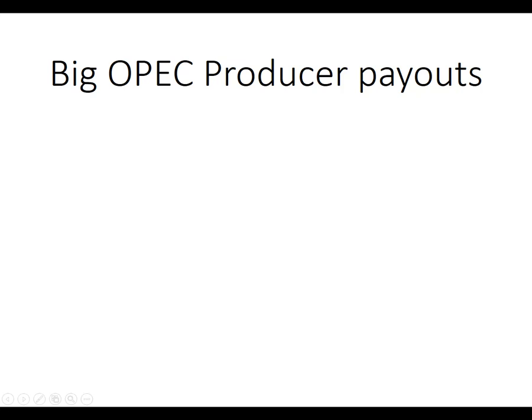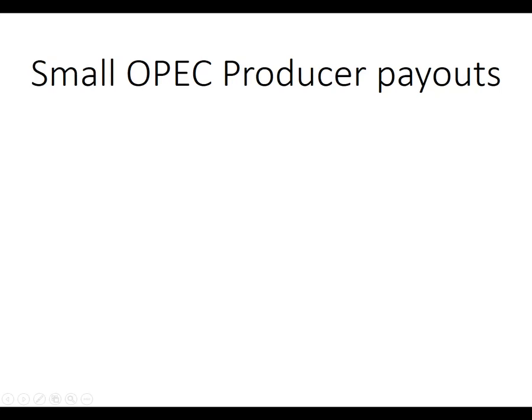You can think about big OPEC producer payouts. For the big producer, they don't want to cheat on the cartel because they want that higher price. If they cheat on the cartel, the price is going to go way down because they're one of the big producers — OPEC will fall apart pretty quickly.